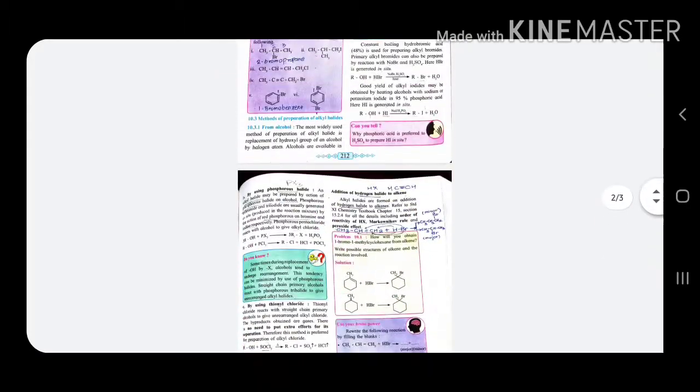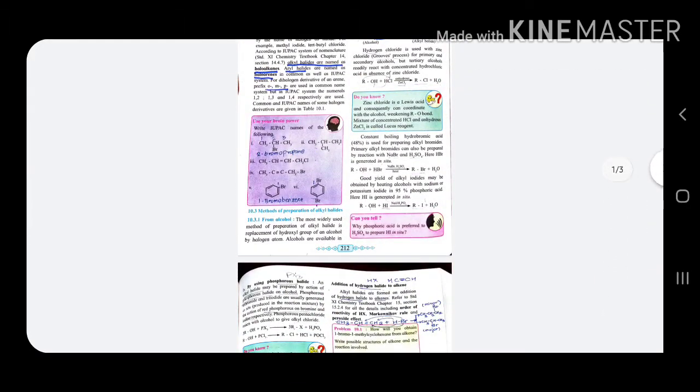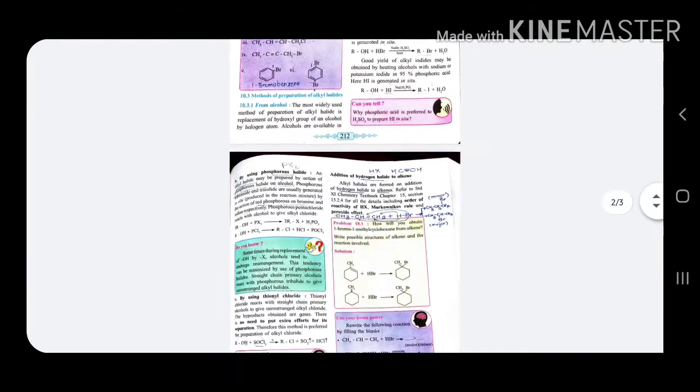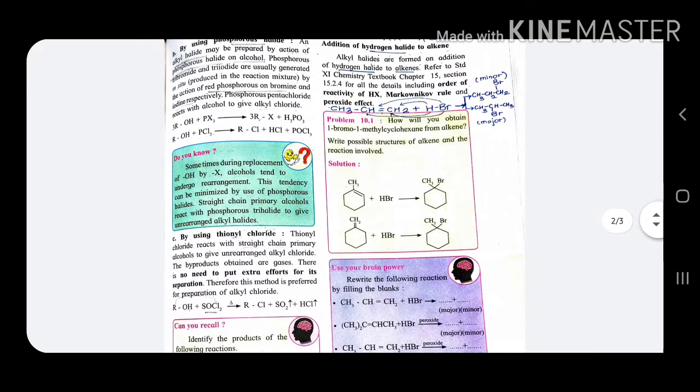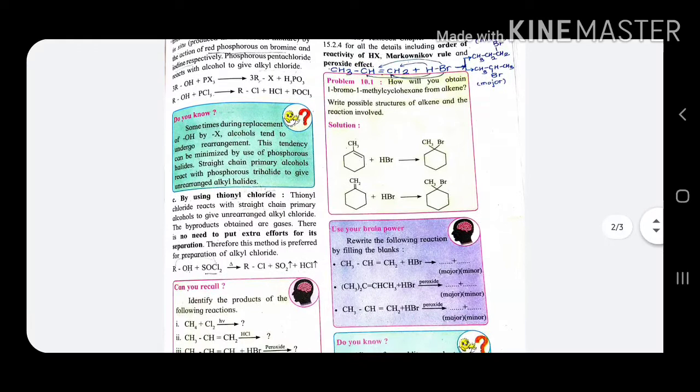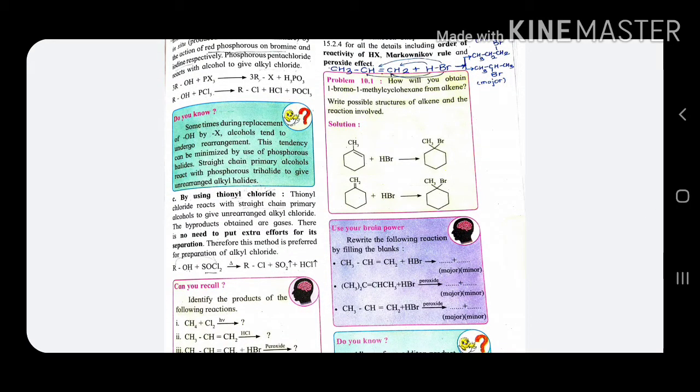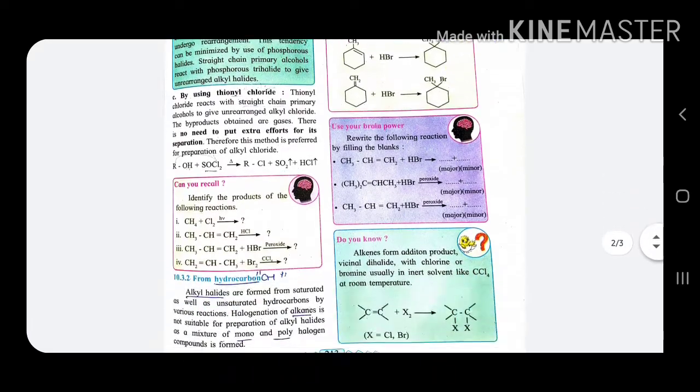We have seen our first point that I have revised. Our second point was by using phosphorus halide. Phosphorus halide is PX3. And when we react to alcohol, it will react to RCl. You have to remember that it is SOCl2, phosphorus halide is PX3.